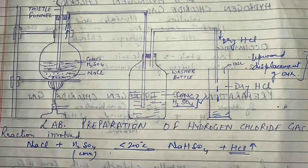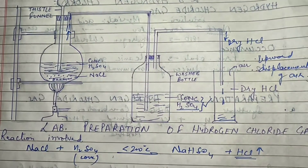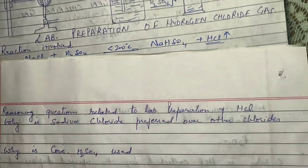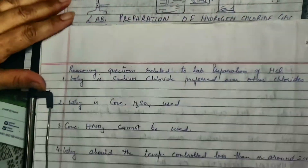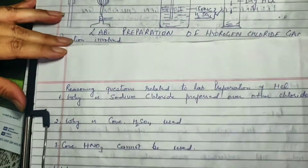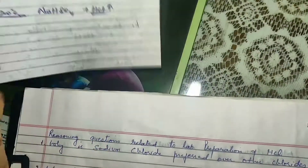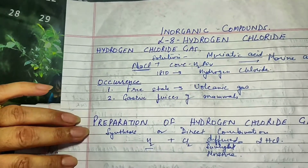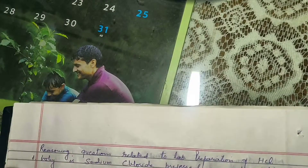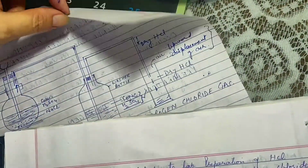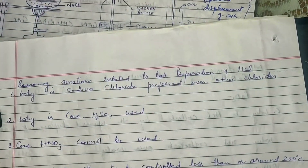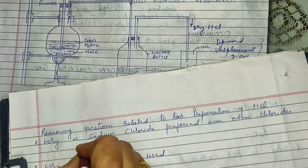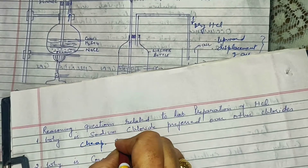Now there are certain reasoning questions related to this preparation. First: why is sodium chloride preferred over other chlorides? We could have taken magnesium chloride, calcium chloride, or copper chloride, but sodium chloride is preferred because it is not very expensive and it is very easily available — it can be found in every city.